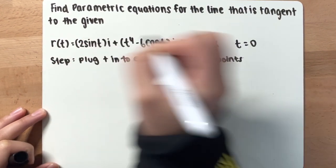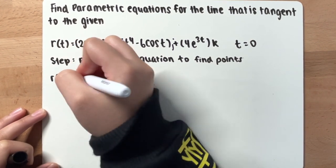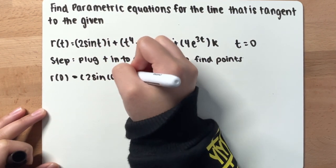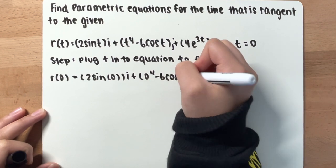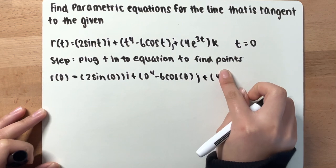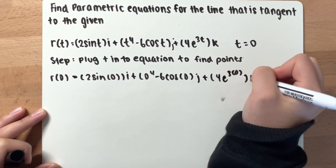Okay, so you now have 2 sine 0, i plus 4 minus 6 cosine 0, j plus 4e^(3·0), k.